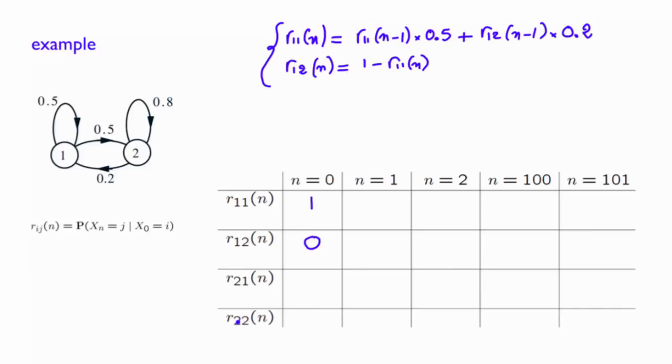And again, r22 of 0 will be 1. And as a result, r21 of 0 will be 0. For n equals 1, these are the simple one-step transition probabilities. So you have 0.5 here and 0.5 here. And r21 here are 0.2 and 0.8.